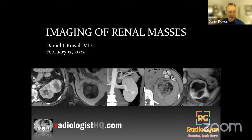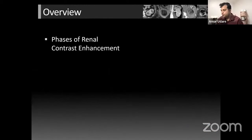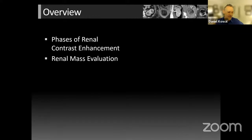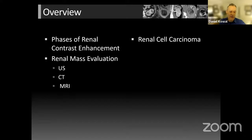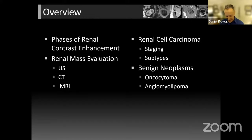I'm going to talk about imaging of renal masses. Starting with an overview, I'll cover phases of renal contrast enhancement, then how to evaluate renal masses on ultrasound, CT, and MRI. Then I'll focus on renal cell carcinoma: key staging points, different subtypes, and how to identify them, particularly with MRI. Then we'll review benign neoplasms, focusing mainly on oncocytoma and AML, and pitfalls to avoid.